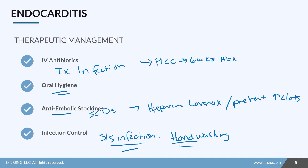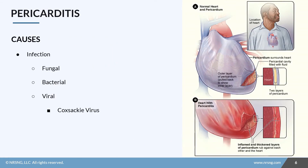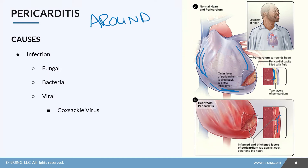Now let's look at pericarditis — inflammation of the lining around the heart, called the pericardial sac. The heart sits within this flexible sac with a small fluid cushion for protection. When the sac becomes inflamed, it fills with fluid, swells up, and becomes stiff. That fluid cushion begins to put pressure on the heart itself, making it harder for the heart to fully contract and relax.